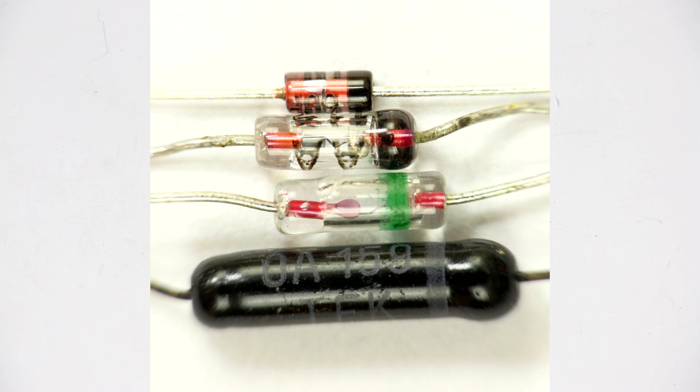The lower black one is a somewhat older germanium diode from the times when they still painted the glass case black, perhaps to protect them from light because germanium diodes are light sensitive.